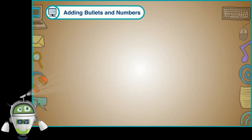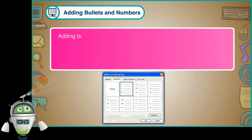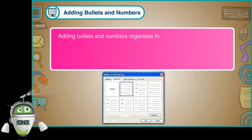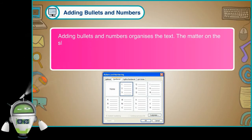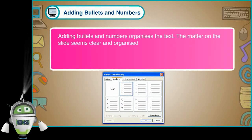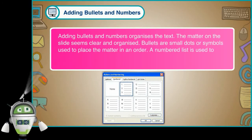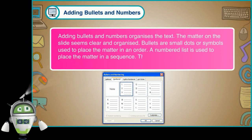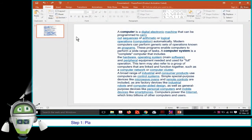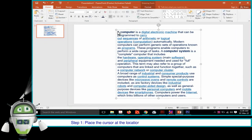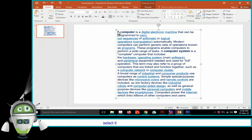Adding Bullets and Numbers: Adding bullets and numbers organizes the text, making the matter on the slide clear and organized. Bullets are small dots or symbols used to place the matter in an order. A numbered list is used to place the matter in a sequence. Step 1 — Place the cursor at the location from where we want to add the bullets, or select the text we want to add the bullets to.